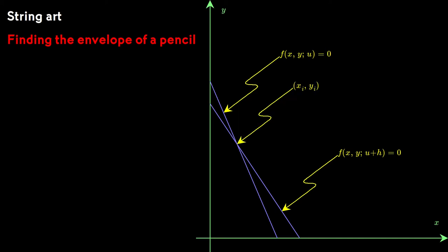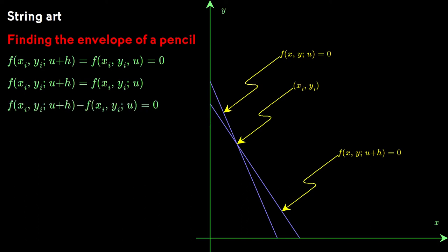Look at the point of intersection, which we'll call x sub i, y sub i. At that point, if there is one, the values of the function corresponding to the parameter values u and u plus h must both be zero and things equal to the same thing are equal to each other. The difference must be zero.